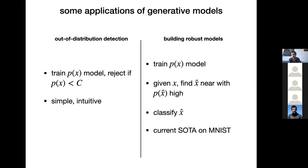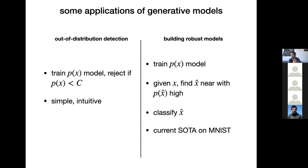With a generative model we train a p(x) model on our data, evaluate the likelihood of all inputs, and define a threshold: if the likelihood is sufficiently low, the input is likely from a different distribution and we can reject it. For building robust models, we can use a density model to find nearby inputs with sufficiently high likelihood when given out-of-distribution examples, and classify those instead. This approach is still state-of-the-art for adversarial robustness on small-scale data like MNIST.